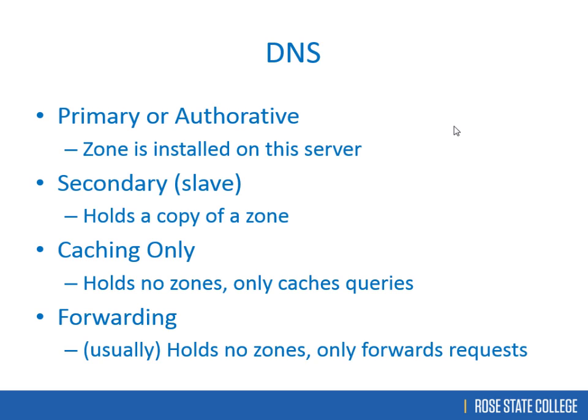We also had a satellite download system at my ISP that would pre-download popular websites every night. So when you asked for a common site we'd already have a cached copy and serve it instantly. A forwarding DNS server holds no zones and just passes requests along — it forwards the query, gets the answer, and returns it, but doesn't remember it.